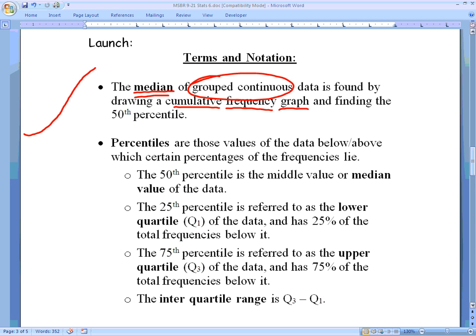We'll take a look at an example of that in a moment, and then we need to take something called the 50th percentile and use that in conjunction with the graph to find our median. So it's all about 50th percentile and something called a cumulative frequency graph.